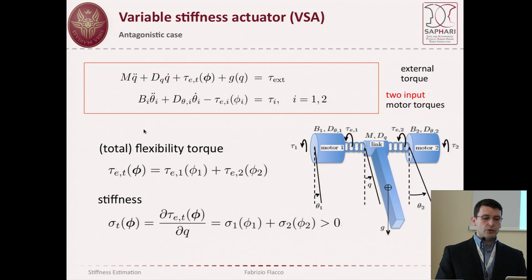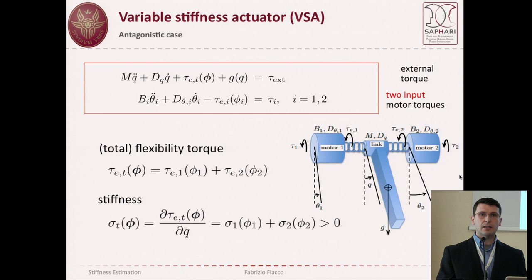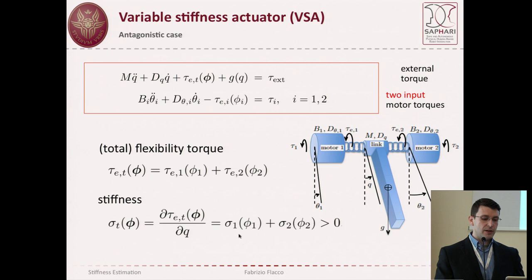The flexible transmission has a special property: it is zero when the transmission is not deformed, and the behavior in extension and compression is symmetric — if you compress by one quantity you get the same stiffness and torque as if you extend by the same quantity. The stiffness is defined as the variation of the flexibility torque with respect to the deformation of the transmission. For an antagonistic VSA, the total torque and total stiffness are given by the sum of the two individual values.